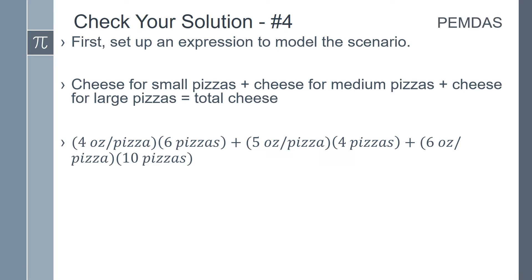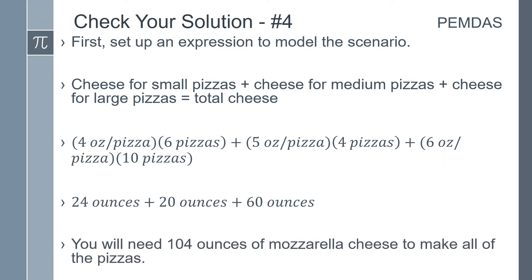Write PEMDAS on the top of the page. There are no operations inside of the parentheses, so we can skip that. There are no exponents, so we can skip that. So now we have multiplication and division. Multiplying from left to right, we find that 4 times 6 is 24, 5 times 4 is 20, and 6 times 10 is 60. So we have the expression 24 ounces plus 20 ounces plus 60 ounces. Now we add: 24 plus 20 plus 60 is 104. You will need 104 ounces of mozzarella cheese to make all of the pizzas.